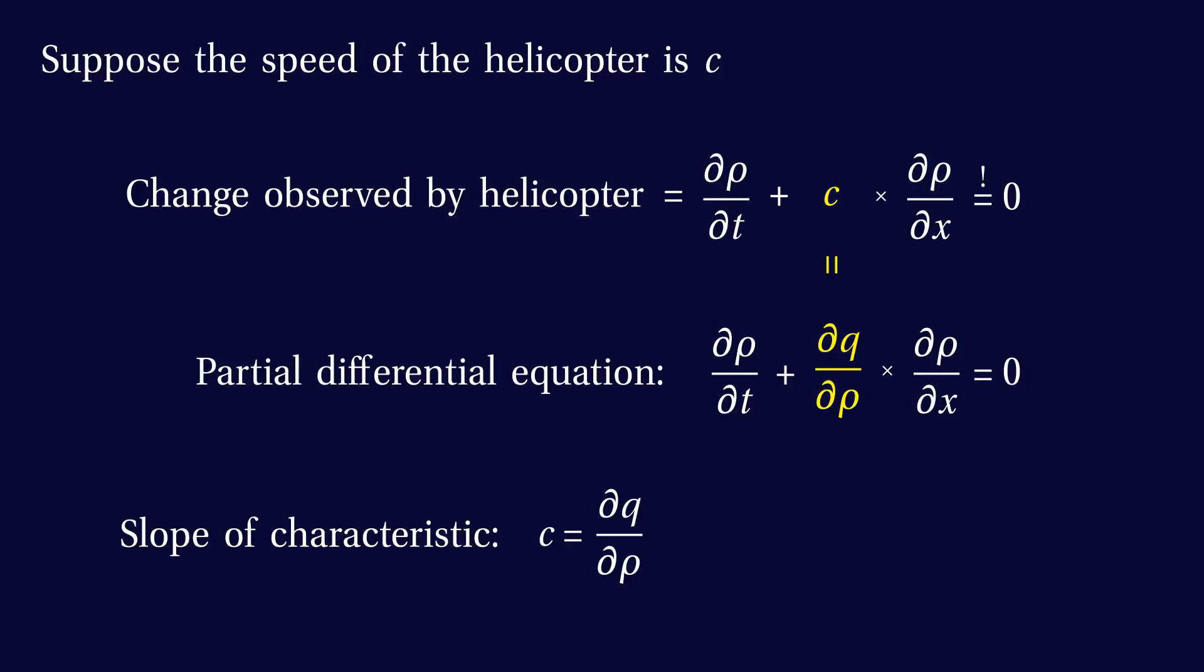Recall that in our model, the flow q is a quadratic function of the traffic density rho, and we find that the slope of the characteristic is 1 minus 2 times rho.